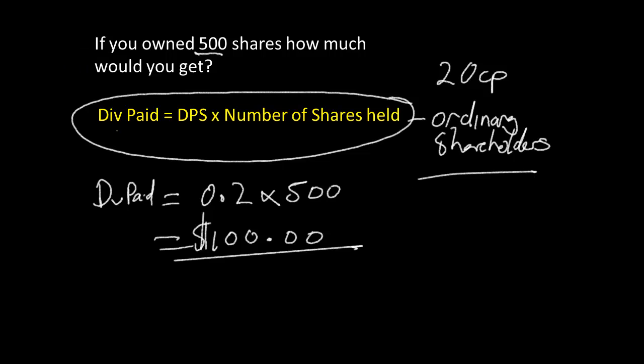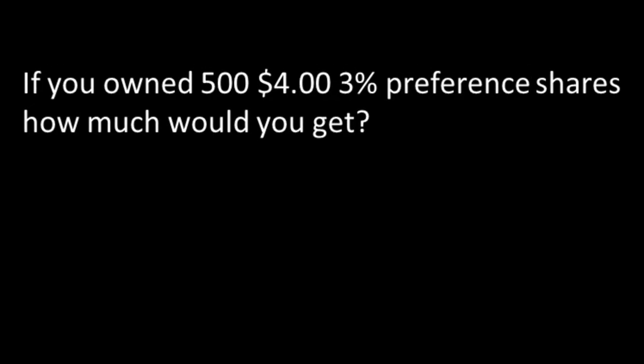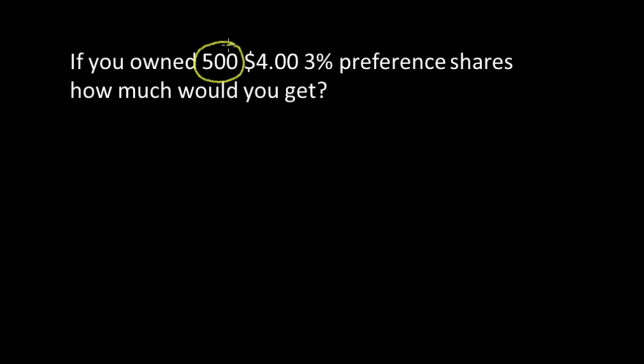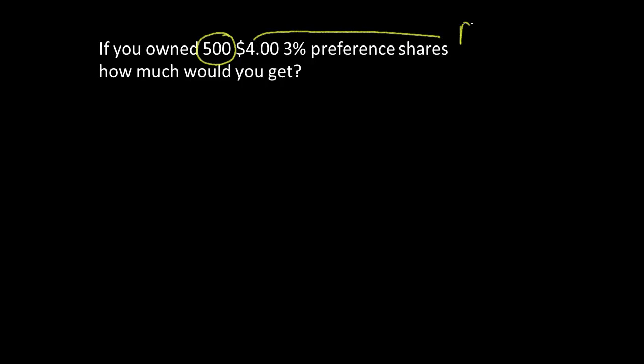Let's look at the preference share calculations. If you owned 500 four-dollar, 3% preference shares, how much would you get? Notice it's worded slightly differently. 500 is the number of shares you own, four dollars is the par value - if you remember, par value is what they were first released at - and 3% is the div rate.